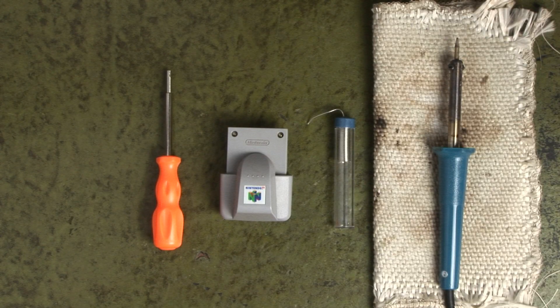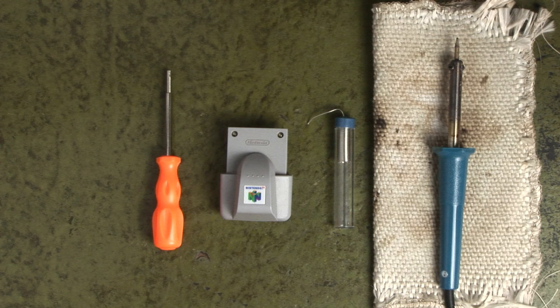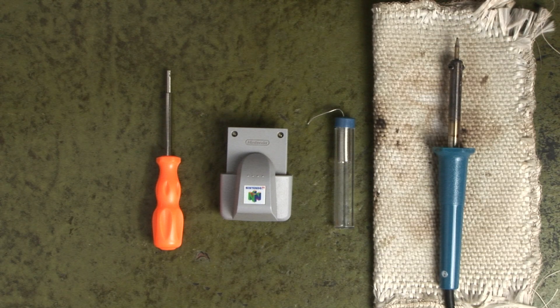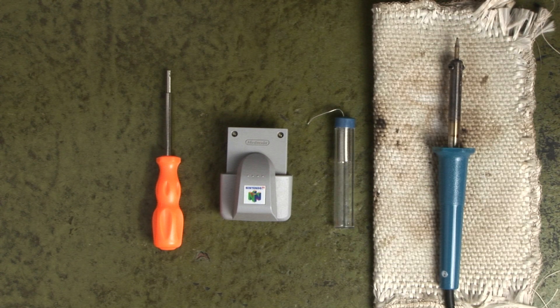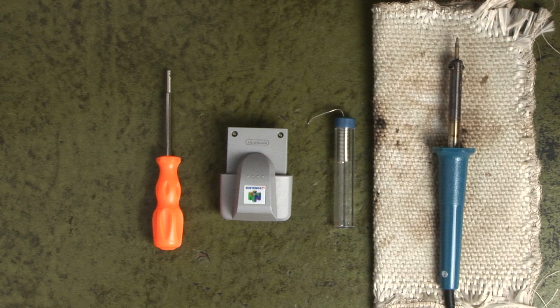To undertake this mod, you will need a 3.8mm game bit, your Rumble Pack, some solder, and a soldering iron. You don't necessarily need, but I would strongly recommend some long-nosed tweezers.